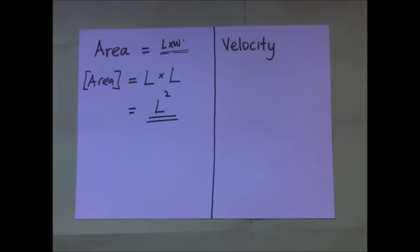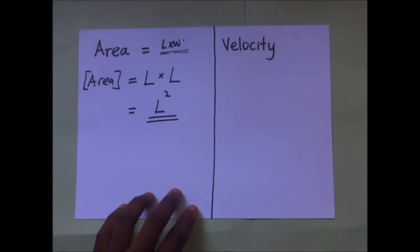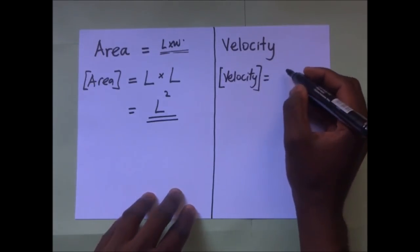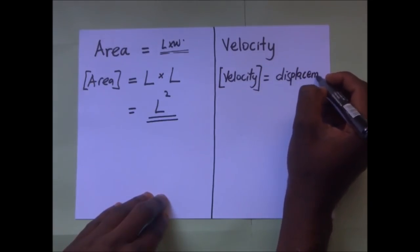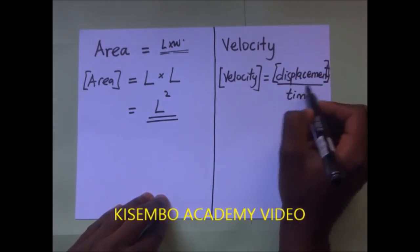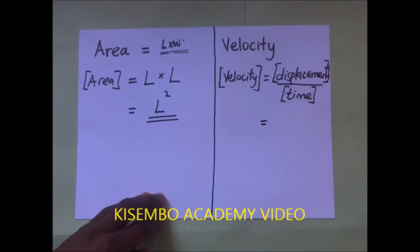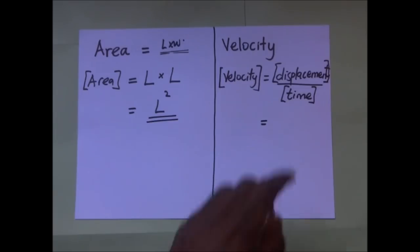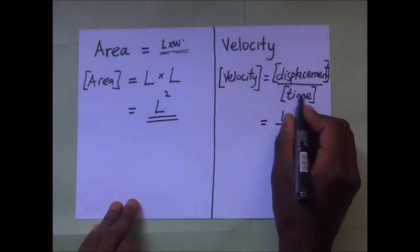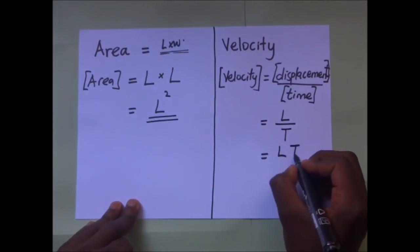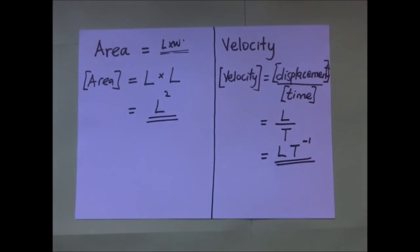For velocity, which is the rate of change of displacement: the dimensions of velocity equal displacement divided by time. Displacement is a length, so it is L, divided by time T. Therefore, the dimensions of velocity are LT to the power negative one.